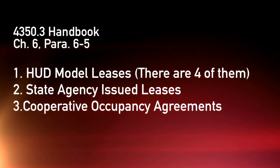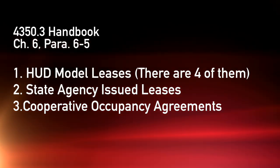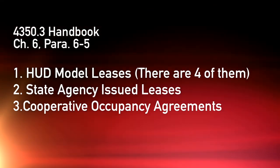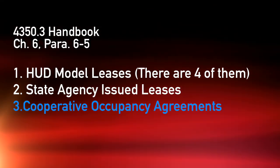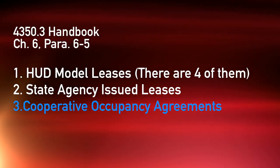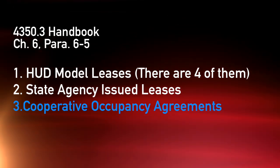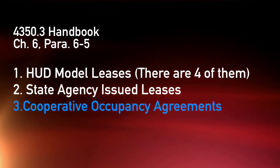These lease types are listed in chapter 6, paragraph 6-5 of the 4350.3 HUD handbook. There are three categories: your typical HUD model leases, and there are four of them; state agency issued leases; and cooperative occupancy agreements — that's what the cooperative housing lease is called: a cooperative occupancy agreement.